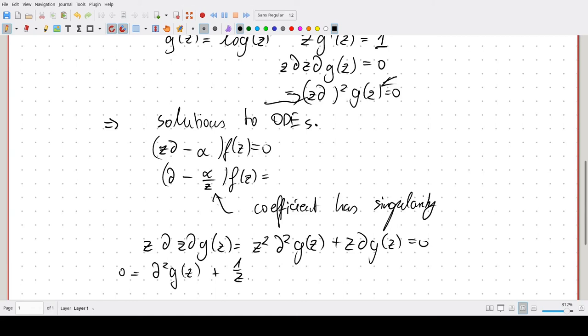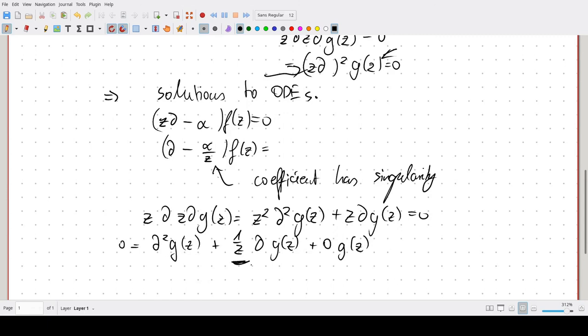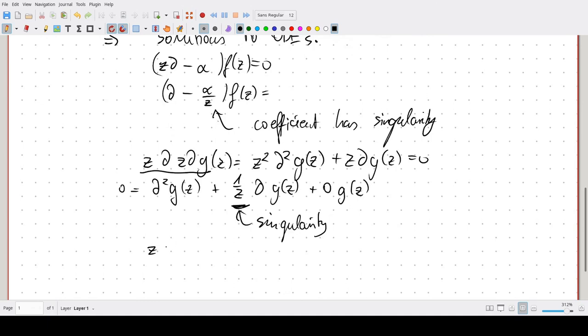Plus one over z times the first derivative plus nothing times the last derivative. So you can see again here we have a singularity. Here we don't but there could also be a singularity here. For example if we looked at not z d squared but z d minus alpha squared, we get blah blah blah and like alpha squared g of z.